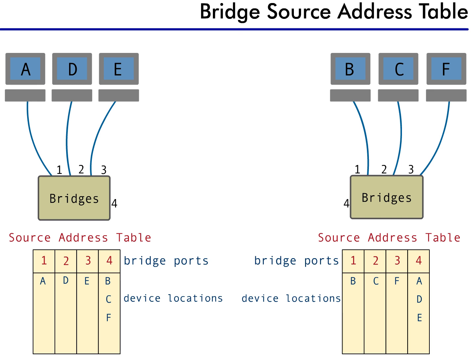Let's take a look at how this works. When a packet is received at a bridge port, the bridge examines the packet to determine where it should be sent. The bridge looks not only at where the packet is going, but also at where it came from. This is accomplished by examining the source address of the packet.